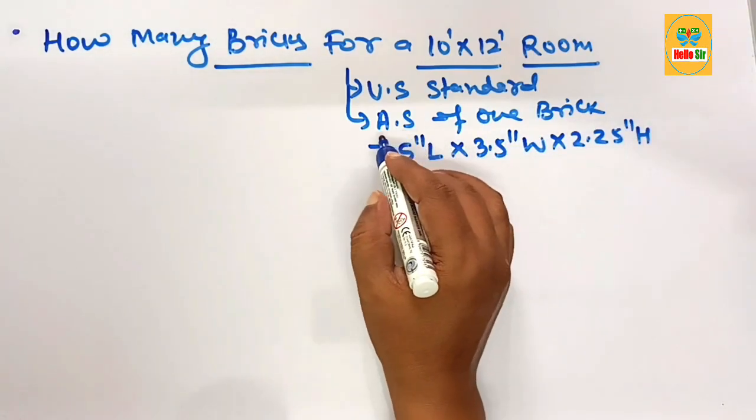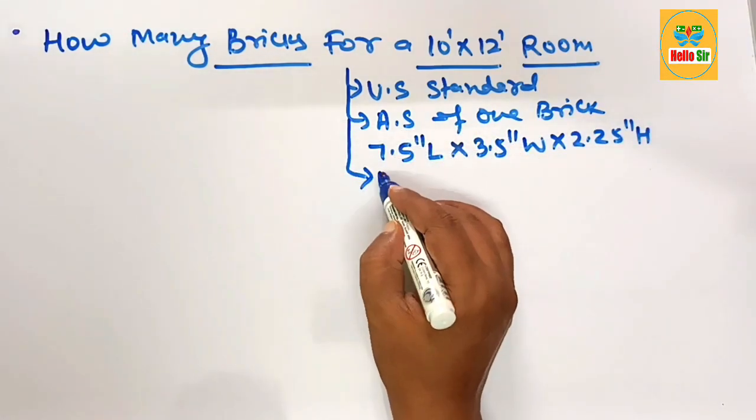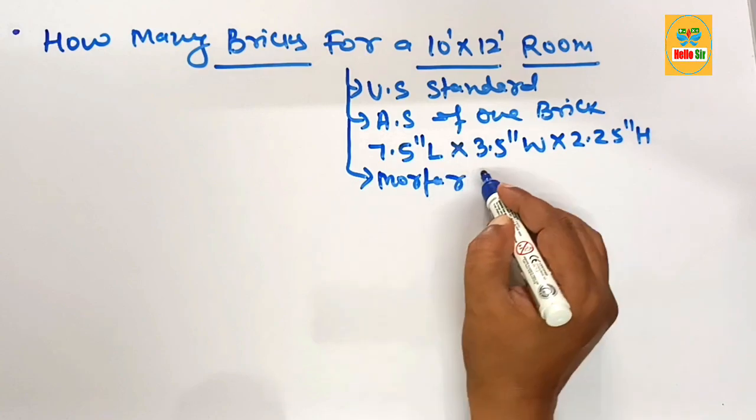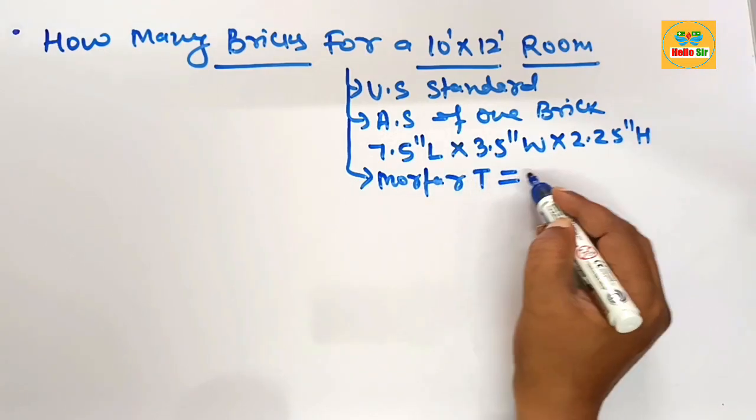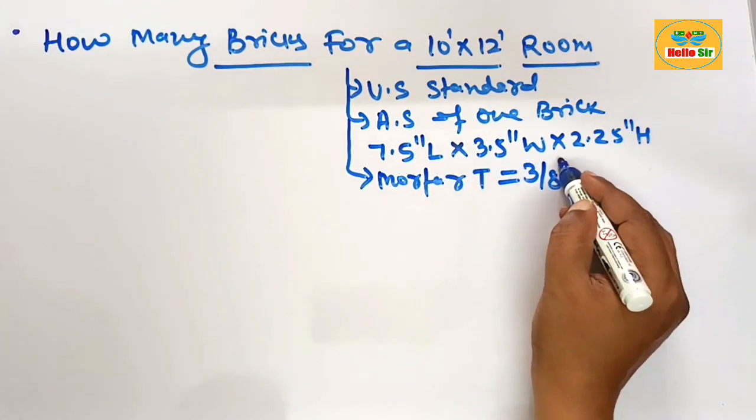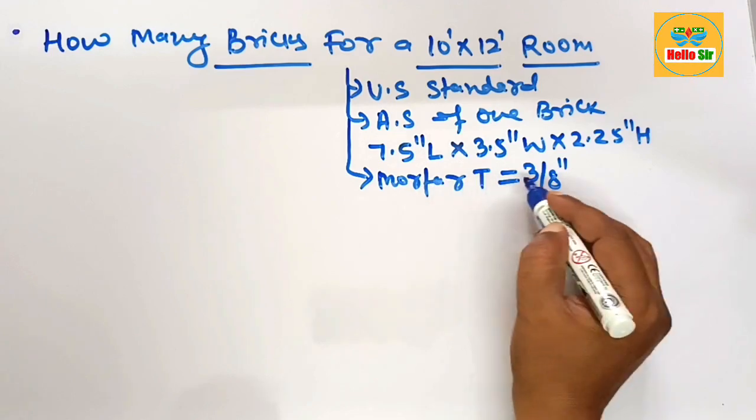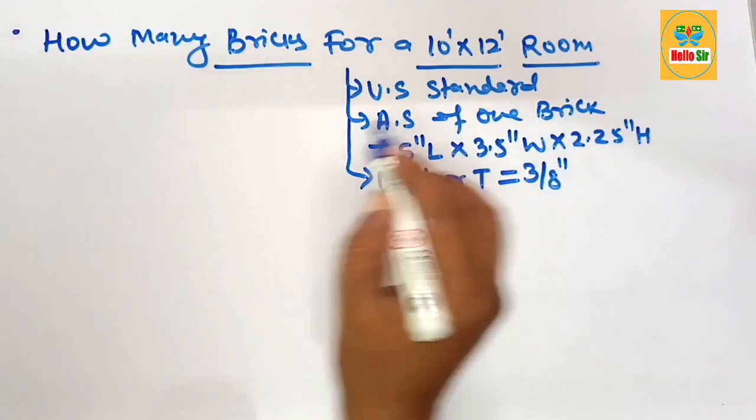This is the actual size of brick. The mortar thickness between the bricks is about 3/8 inches.